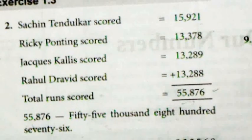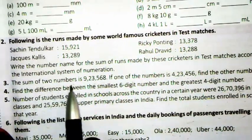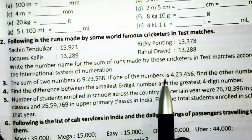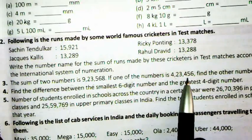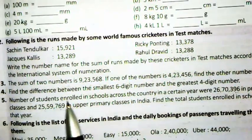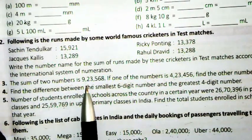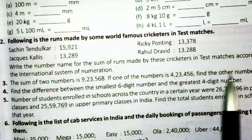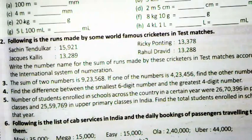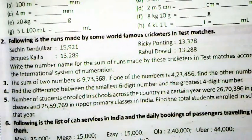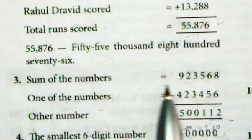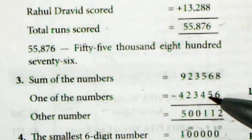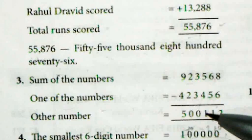The next sum: the sum of two numbers is 9,23,568. If one of the numbers is 4,23,456, find the other number. Is condition mein, jab sum of two numbers diya ho aur ek number diya ho, to other number nikalne ke liye sum mein se us number ko subtract kar denge. Total minus one number equals the other number.